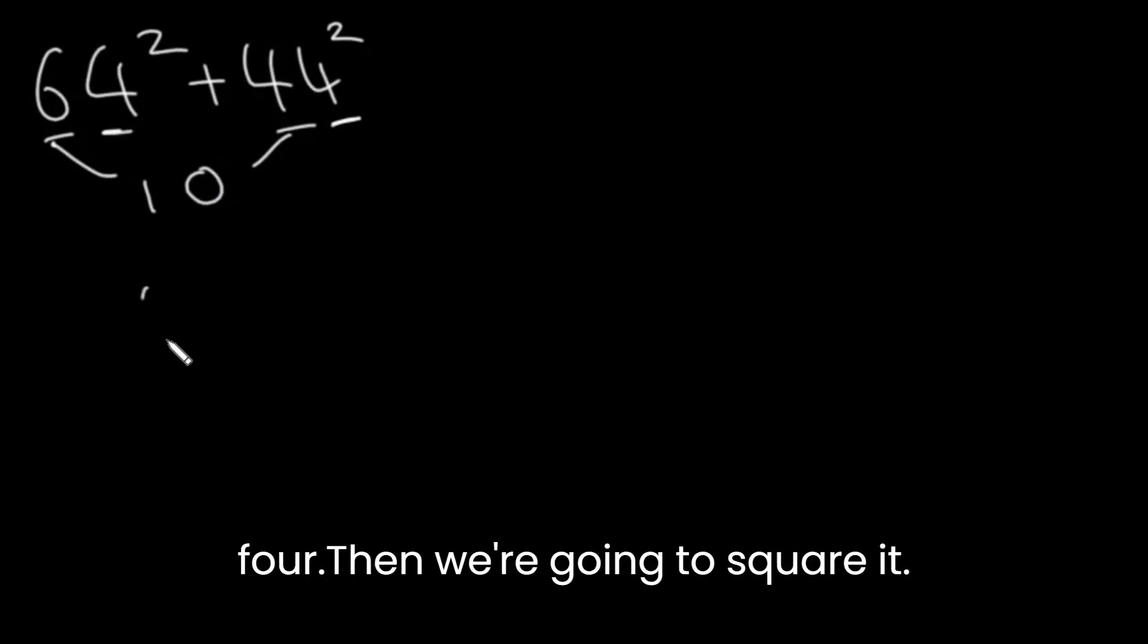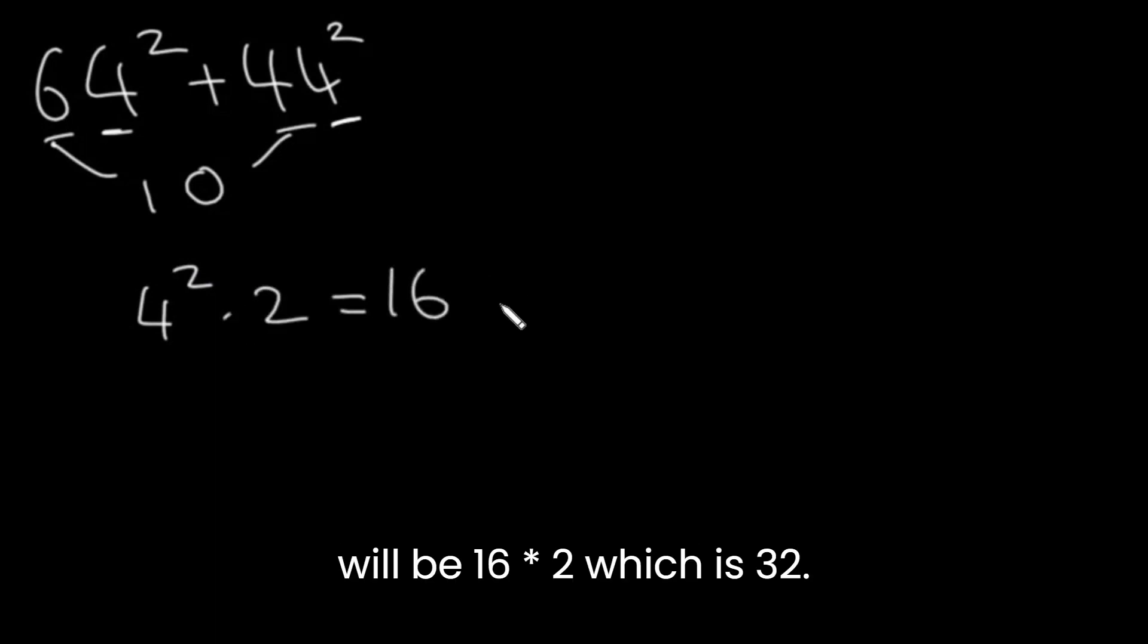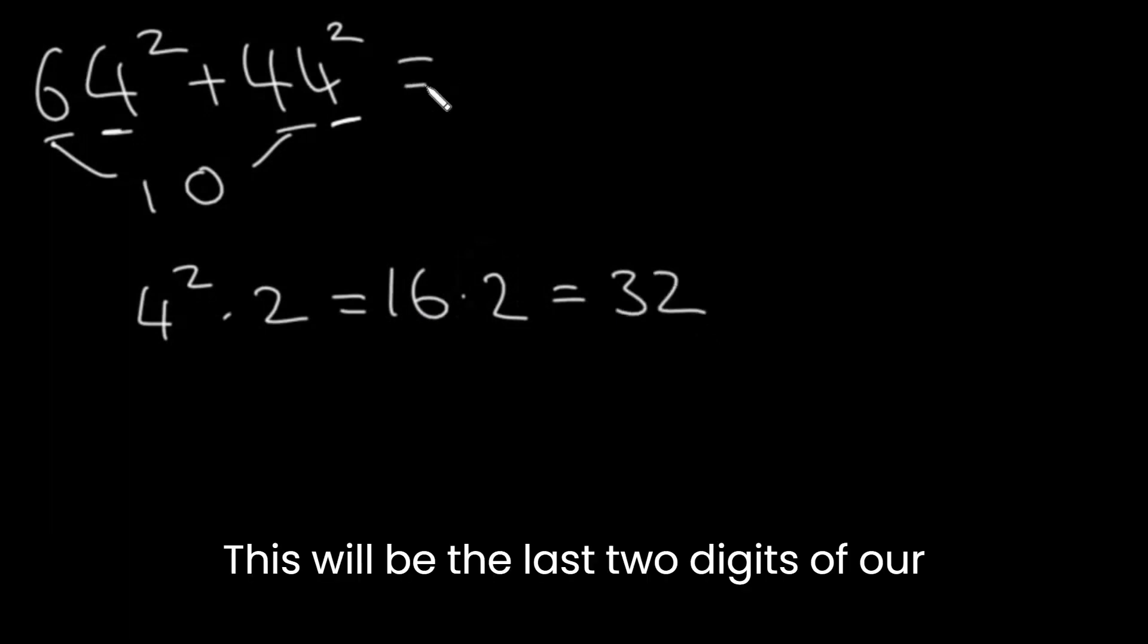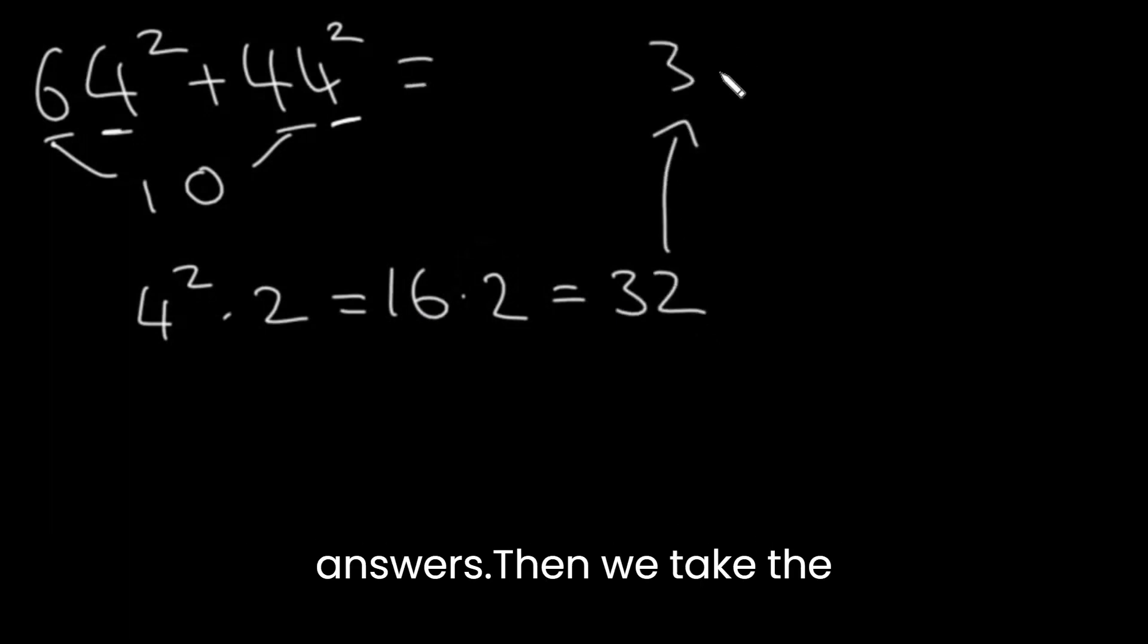So the trick is we're going to take the 4, then we're going to square it and then multiply it by 2. So this will be 16 times 2, which is 32. This will be the last two digits of our answer.